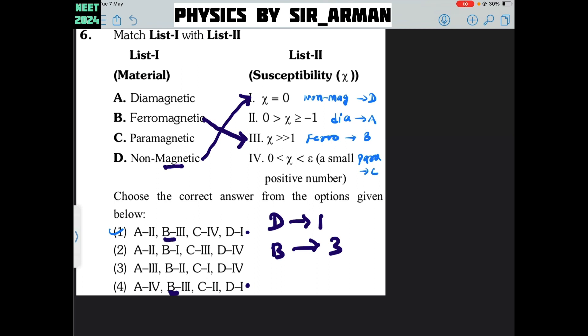Now, paramagnetic. Paramagnetic has a very small susceptibility. So for C there is option number 4.